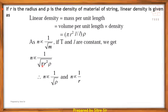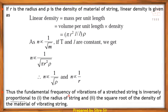Since m = πr²ρ, and if π is constant, n is inversely proportional to r² and inversely proportional to ρ. Therefore n is inversely proportional to √ρ, and n is inversely proportional to r. Thus the fundamental frequency of vibrations of a stretched string is inversely proportional to the radius of the string and the square root of the density of the material of the string.